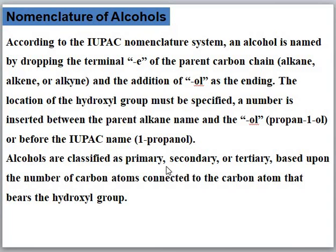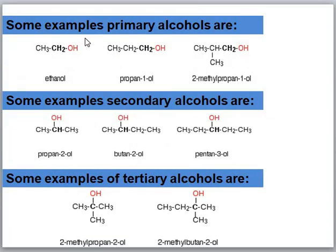Alcohols are classified as primary, secondary, or tertiary alcohols based upon the number of carbon atoms or alkyl groups connected to the carbon atom that bears the hydroxyl group. Here are some examples of different types of alcohols. Primary alcohols contain the hydroxyl group bonded to a carbon atom that has only one other carbon atom attached. All primary alcohols have the same type of structure.